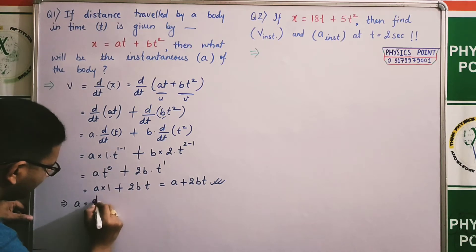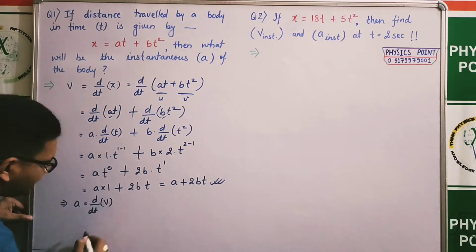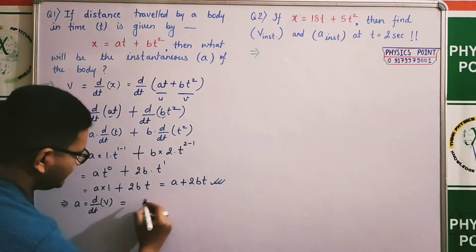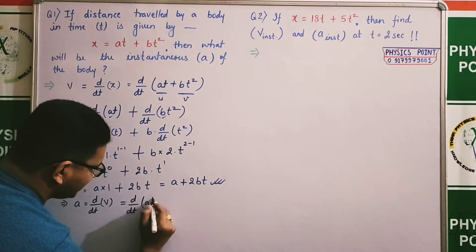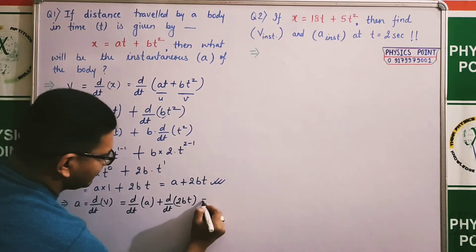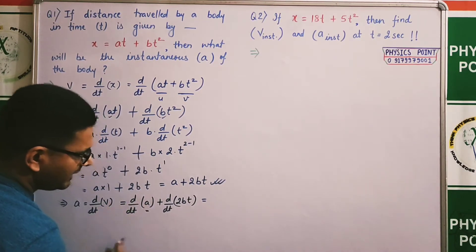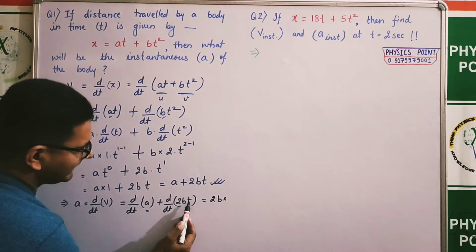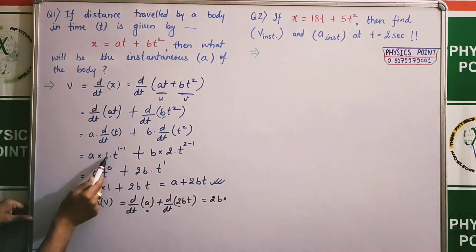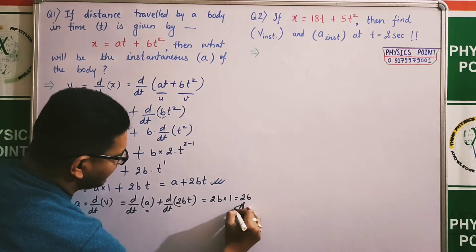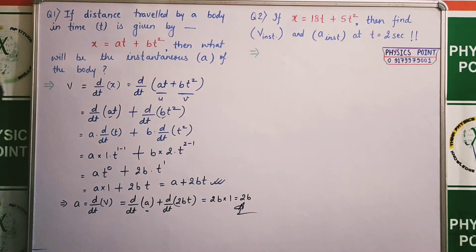By definition acceleration = dv/dt = rate of change of velocity with respect to time। v = a + 2bt को differentiate करते हैं: a constant है → 0; 2b constant बाहर → d/dt of t = 1। तो acceleration = 0 + 2b·1 = 2b। Using differentiation इस तरह numerical solve होता है।